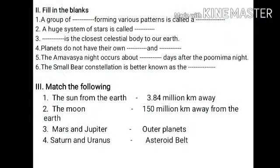Fill in the blanks. First one: a group of — forming various patterns is called a — . The answers are: stars and constellation.